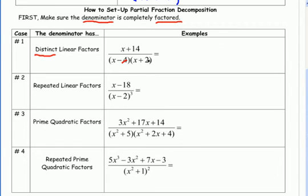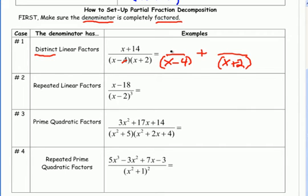Because I have two distinct factors, I'll get two fractions, and each one gets its own fraction. I'll put x minus 4 in one denominator and x plus 2 in the other. Since these factors are linear, up top I'm going to put a constant — a. Since a is just a constant, it has degree 0, and the numerator will always be one degree less than the denominator. So with degree 1 in the denominator, a is just a constant. The second fraction gets b. In the next lesson we'll talk about how to find a and b.